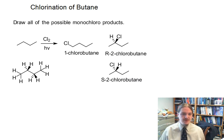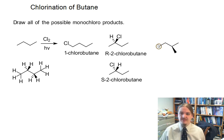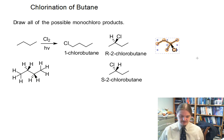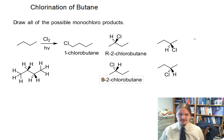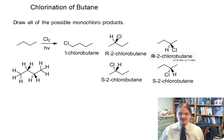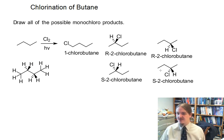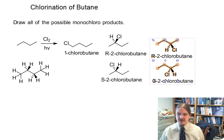Moving on to the third position on butane, I'm only going to draw those hydrogens at the third position for clarity. I can draw two structures, and again you can look at those and say those are enantiomers of each other. It actually happens that the one on the top is R-2-chlorobutane and the one on the bottom is S-2-chlorobutane. So substituting at position three actually generates the same products as substituting at position two — these are not new compounds.